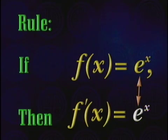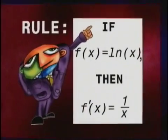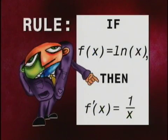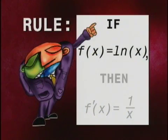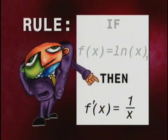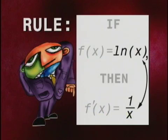The second trick rule deals with natural logs. The natural log rule states that if f of x equals the natural log of x, then its derivative, or f prime of x, is just 1 over x. So, the derivative of the natural log of x is 1 over x.